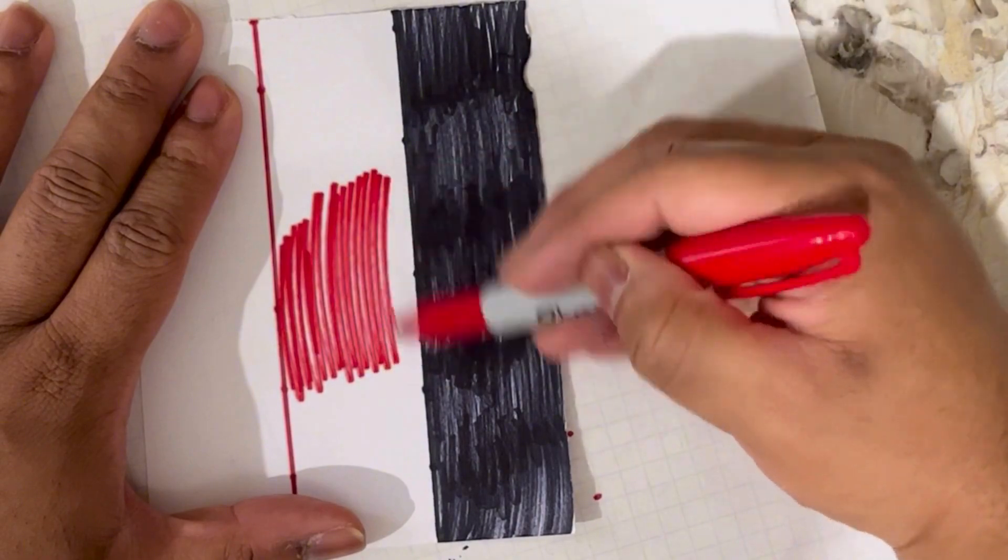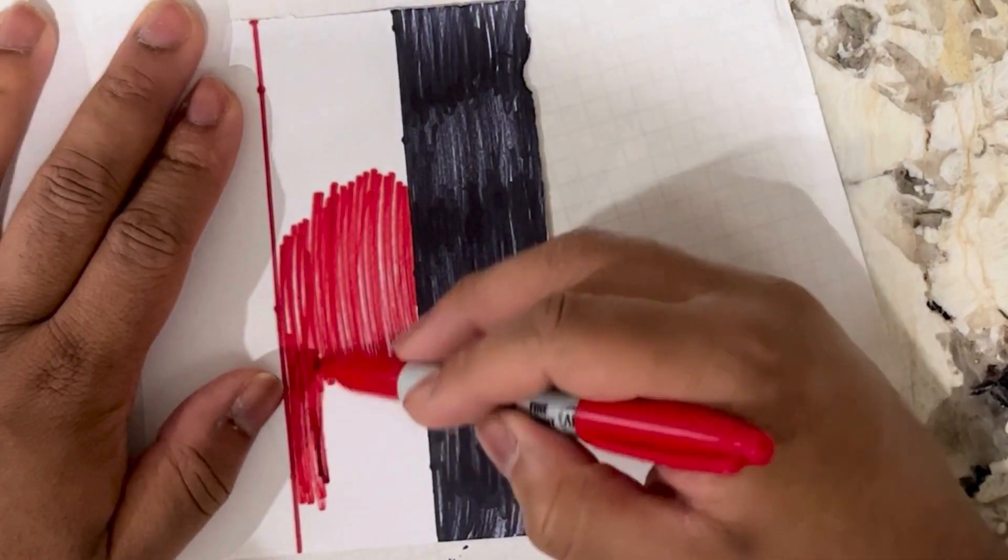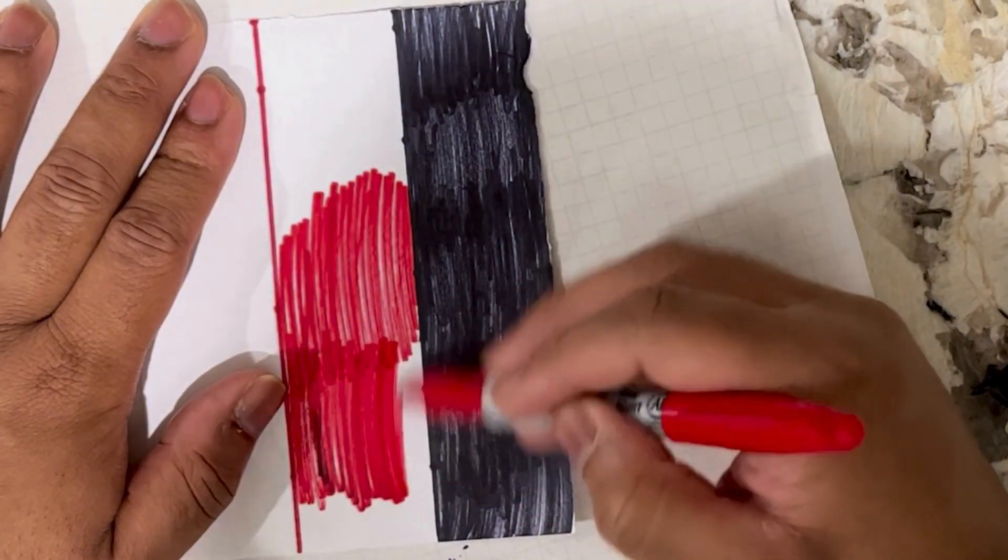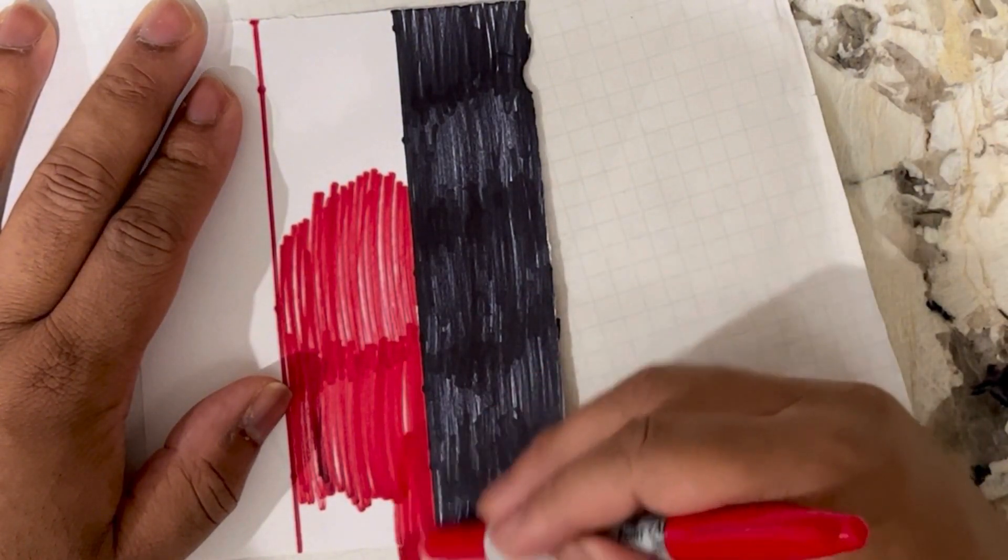Step 3. Move on to the middle section, the vibrant red. Carefully fill it in, ensuring clean lines. Red represents courage and the challenges overcome throughout Germany's rich history.